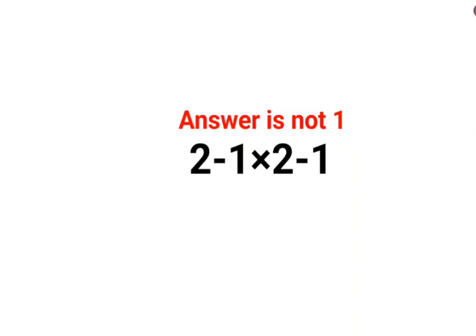Welcome everyone. A lot of people thought that the answer for this one was supposed to be 1. See, 2-1 is 1, 2-1 is 1. So 1 multiplied by 1, the answer is 1.